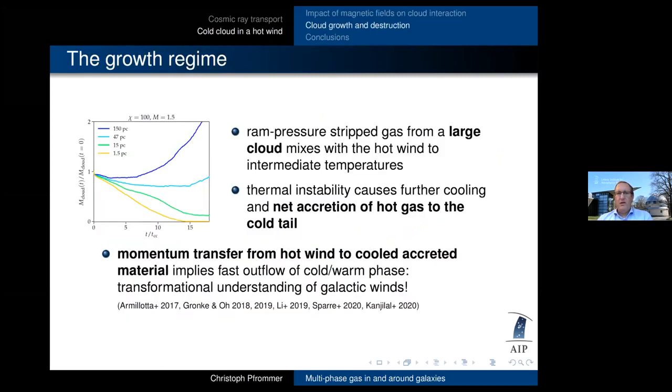What is now changing the game is the size of the cloud. If you increase now the cloud diameter or radius from 150 parsecs to 1.5 parsecs, you see that the cloud mass is not decreasing as a function of time, as you see here for the small clouds. But in fact, at some critical length scale, it starts to increase. Why is this? Well, the ram pressure stripped gas from a large cloud mixes with the hot wind to intermediate temperatures. The instability causes a further cooling and in fact, the net accretion of hot gas to the cold tail. This means we have a momentum transfer from the hot wind to the cooled accretion material. And that implies we have now a fast outflow of a cold warm phase. This completely transforms our understanding of galactic winds. And we are not the only ones studying on this. There's a lot of papers being written recently on this effect.